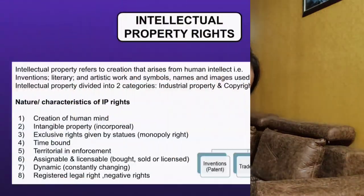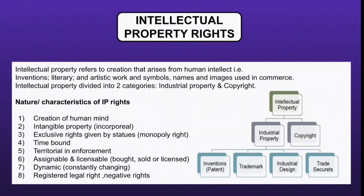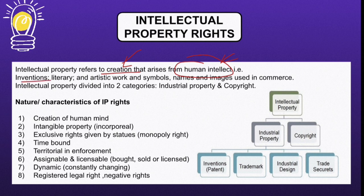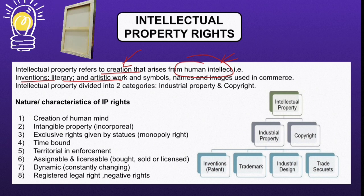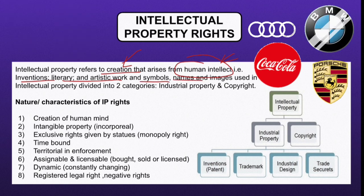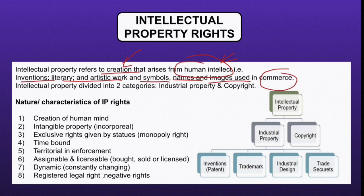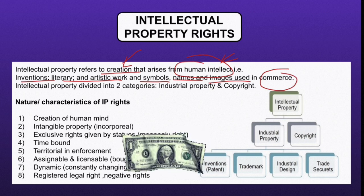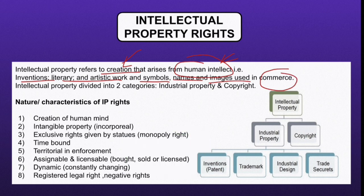Without further ado, let's get started. Intellectual property rights refers to creations that arise from human intellect — things that come from the human brain. These can be in the form of inventions, literary or artistic work, symbols, names, or images in commerce — things that have commercial or monetary value. Intellectual property is divided into two categories: industrial property and copyright.